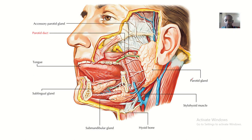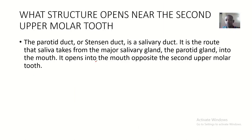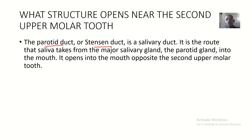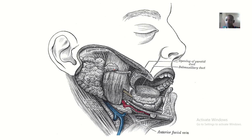The structure that opens near the second upper molar tooth is actually Stensen's duct — that's the duct of the parotid gland. Saliva from the parotid gland gets to the mouth through Stensen's duct. The parotid duct is a salivary duct and is the route saliva takes from the parotid gland into the mouth, opening opposite the second upper molar tooth.